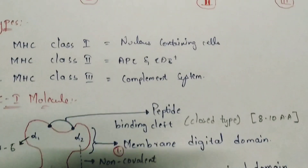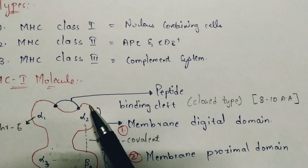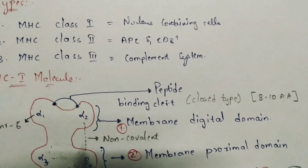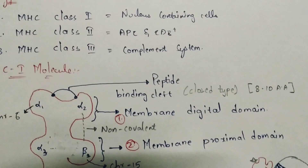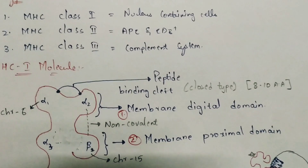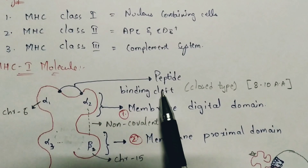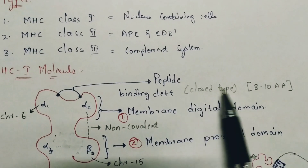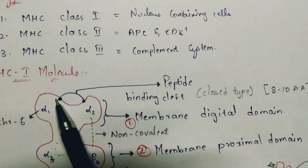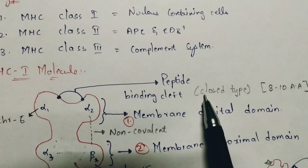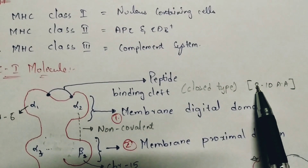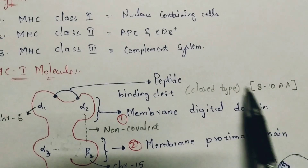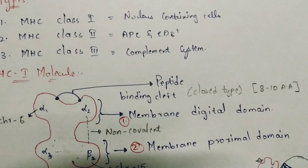An important feature of MHC class 1 molecule is the peptide binding cleft, which is the key difference between MHC class 1 and class 2. In class 1, the peptide binding cleft is a closed type — it is bound on both sides with no openings. Its size is formed by a combination of 8 to 10 amino acids.